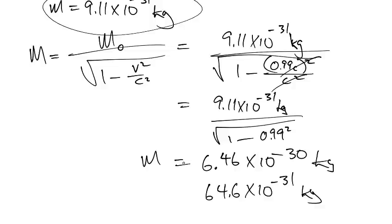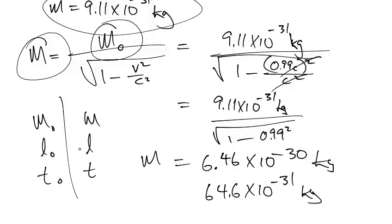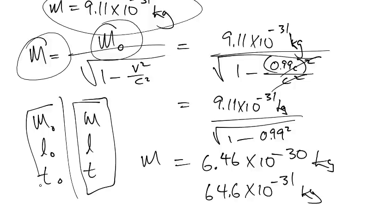As long as you understand the difference between M naught and M. For all three types, there's M and M naught, there's L naught and L, and there's T naught and T. These are measured in a different frame of reference as compared to the observer, and these are measured in the same reference frame as the observer.